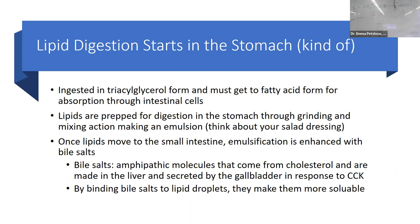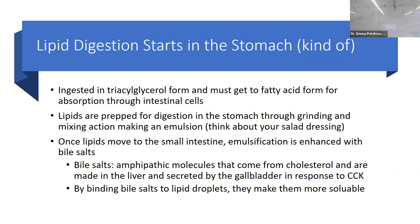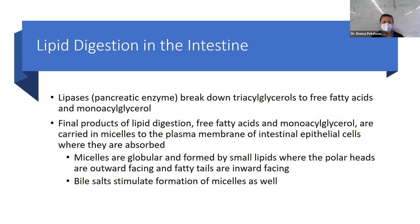Gallbladder does not create bile — that's a common test point. Bile is created in the liver, stored in the gallbladder, and secreted into the small intestine. Don't let them trick you. Bile salts are amphipathic molecules that come from cholesterol — a way to get rid of excess cholesterol. They're made in the liver and secreted from the gallbladder in response to cholecystokinin, or CCK. Bile salts bind lipid droplets and make them more soluble. From there, we use pancreatic lipases to break down triacylglycerol into free fatty acids and monoacylglycerol.